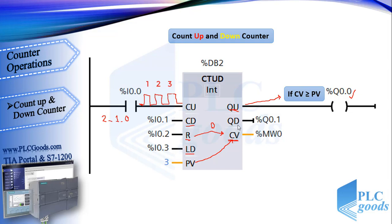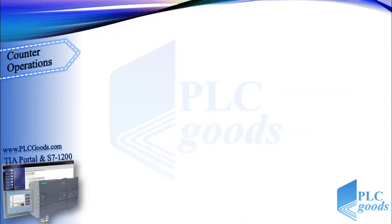The second output QD will be on if CV is equal to or less than 0. We can also use the CV output to store the current value. Now pause this video and try to work with this counter in TIA software like the previous counters.